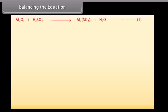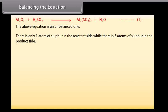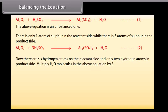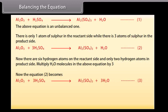Al2O3 plus H2SO4 gives Al2(SO4)3 plus H2O. The above equation is an unbalanced one. There is only one atom of sulfur in the reactant side, while there are three atoms of sulfur in the product side. Al2O3 plus 3H2SO4 gives Al2(SO4)3 plus H2O. Now there are six hydrogen atoms on the reactant side and only two hydrogen atoms in product side. Multiply H2O molecules in the above equation by three.